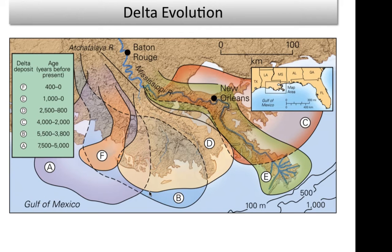About 4,000 years ago it was in here, about 3,000 years ago it was way out over here, about 2,000 years ago it was over here, and over the last 1,000 years it's been coming out where it presently is today. But it wants to shift — it wants to start draining toward the Atchafalaya River, which is letter F in this direction.